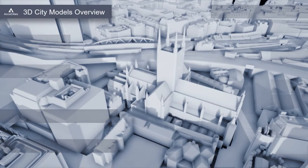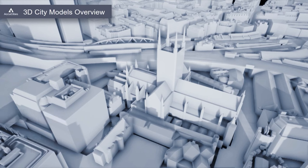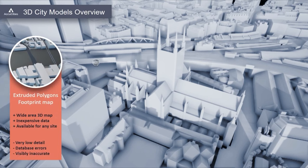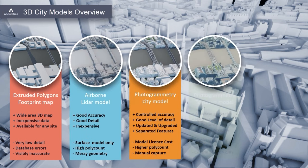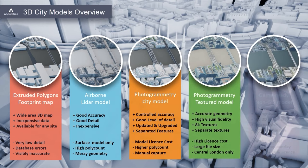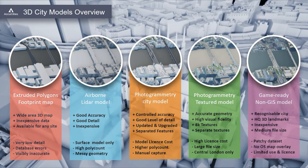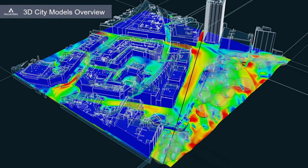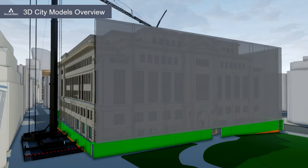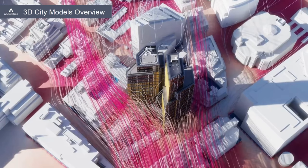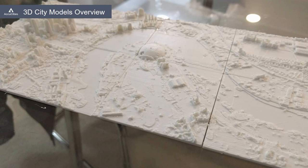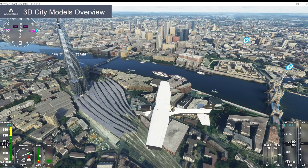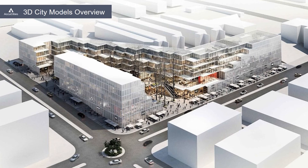Welcome to an overview of 3D city models with AccuCities. Today we will look at a direct comparison of five different 3D city models, with overlaid renders to compare and contrast the accuracy and level of detail for each. In the second part, we will look at real-world case studies of their use, especially in the context of sustainable architecture and construction, considering the suitability of each type and highlighting applications where free or inexpensive models might be sufficient.